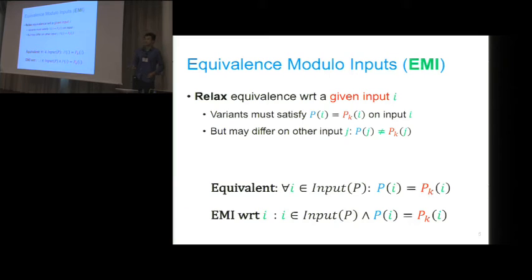In 2014, our group proposed the concept of equivalence modular inputs. Instead of using the equivalence defined over the entire space of the input program, we now focus on a single input. Suppose we have a program variant PK, and if we use the input to render that program PK, if the output is the same as by running P with the same input I, we say that P and PK are EMI to each other. This is a relaxed version of the equivalence.